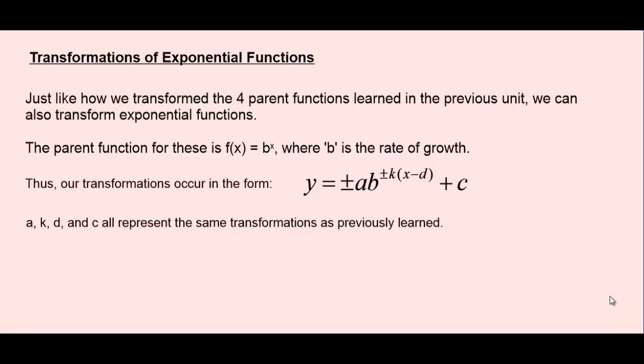The a value represents vertical stretches or compressions. The k value represents horizontal stretches or compressions. The d value is a translation left or right, and the c value is a translation up or down. Also, if the a or k values are negative, we're going to have some reflections over the x-axis or the y-axis.